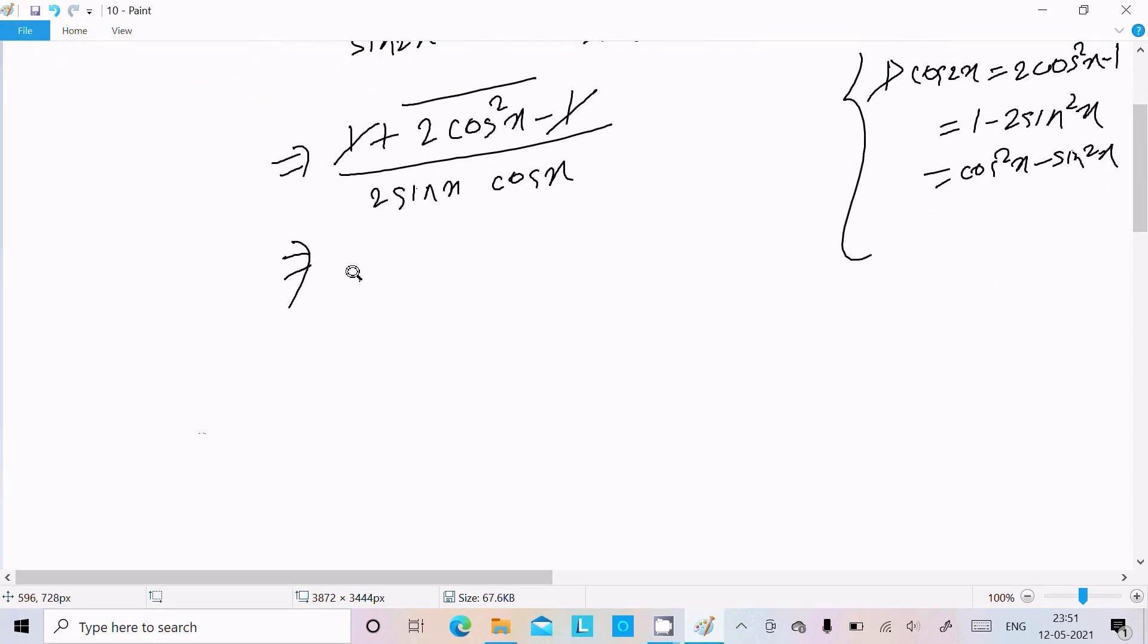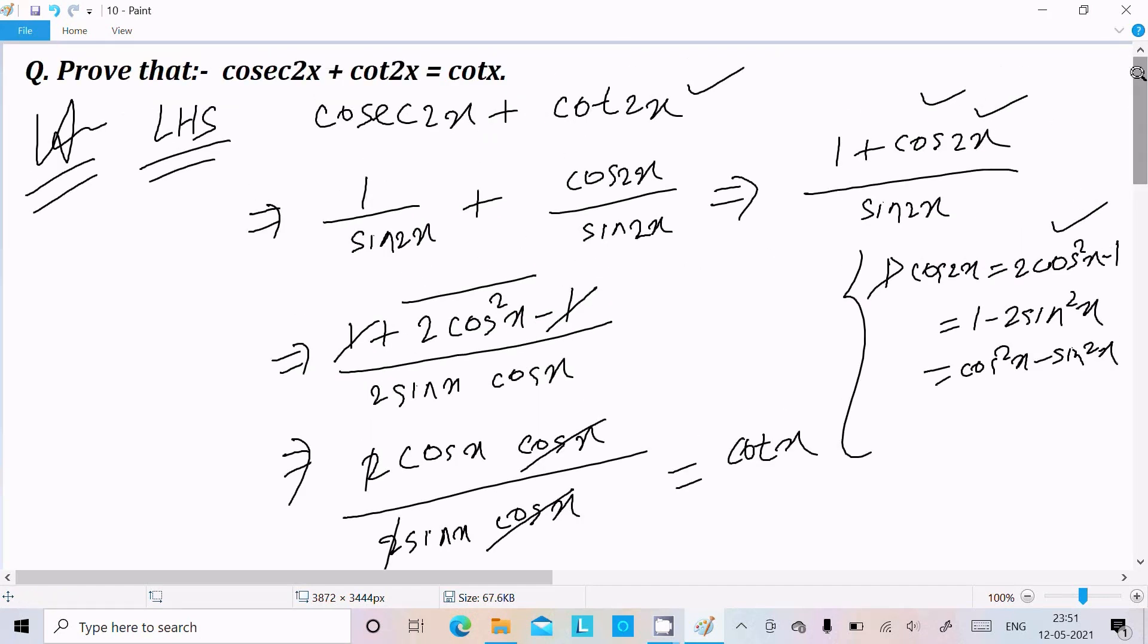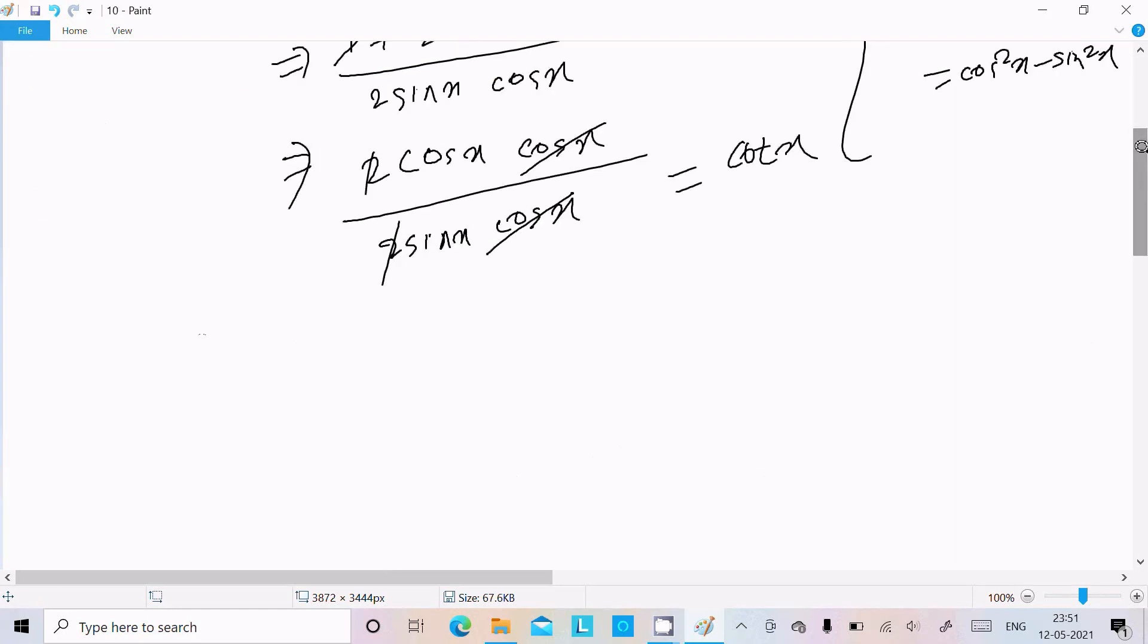Now here 2 cos squared x that's left. So we can write cos x into cos x. Here 2 sin x into cos x. So cos x is cancelled. Here we can get cot x. So on the right hand side cot x is there. So we can write LHS equals RHS equals cot x. This is proved.